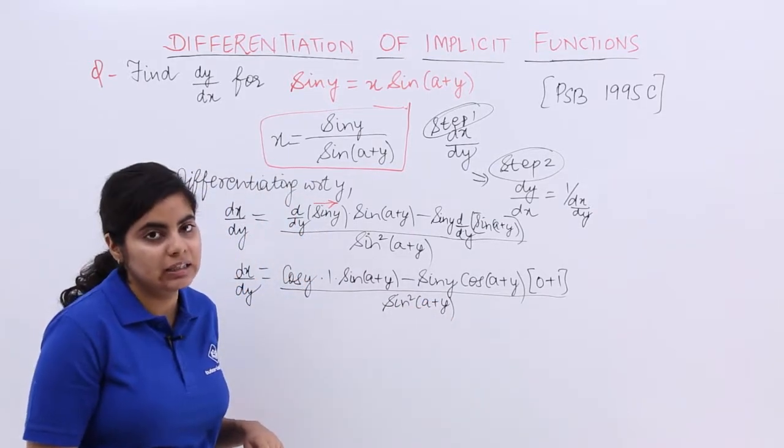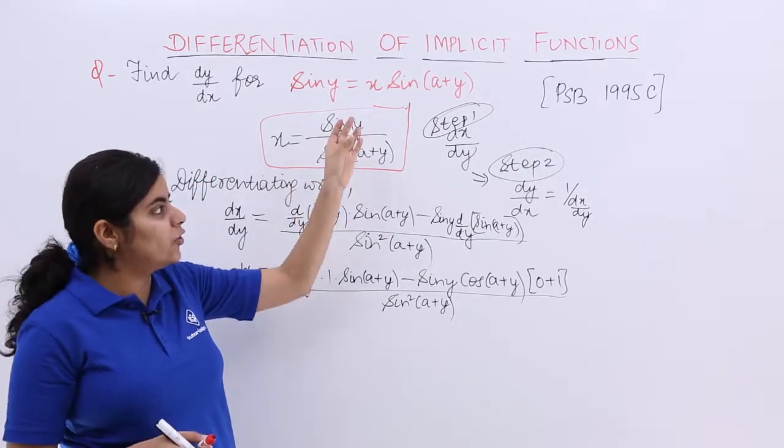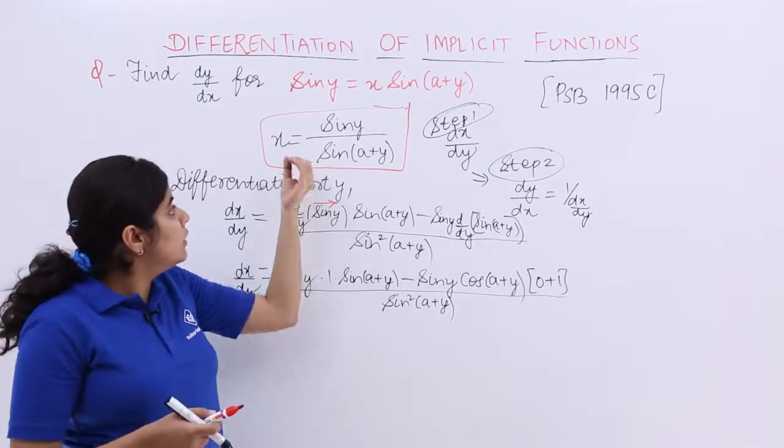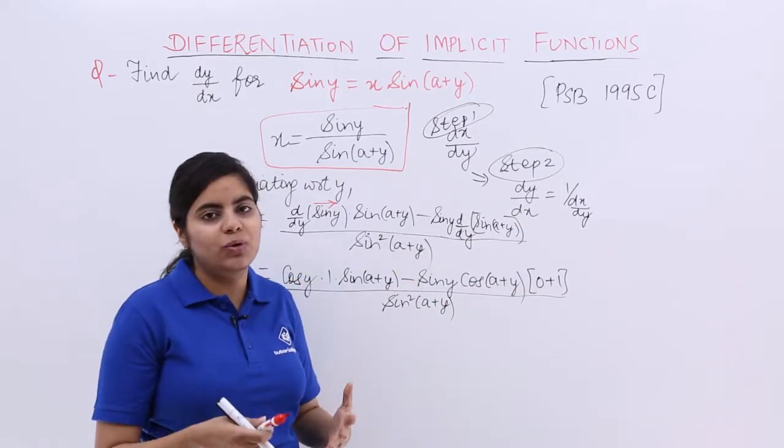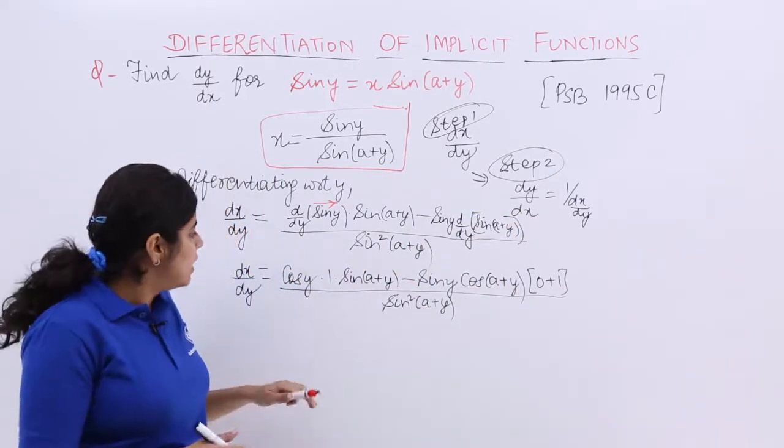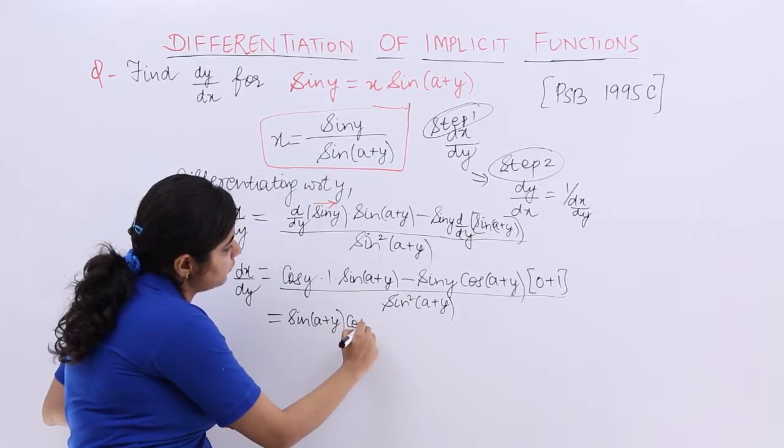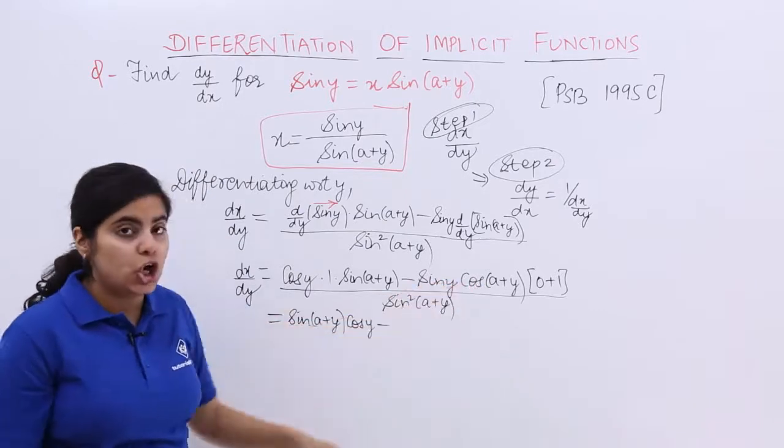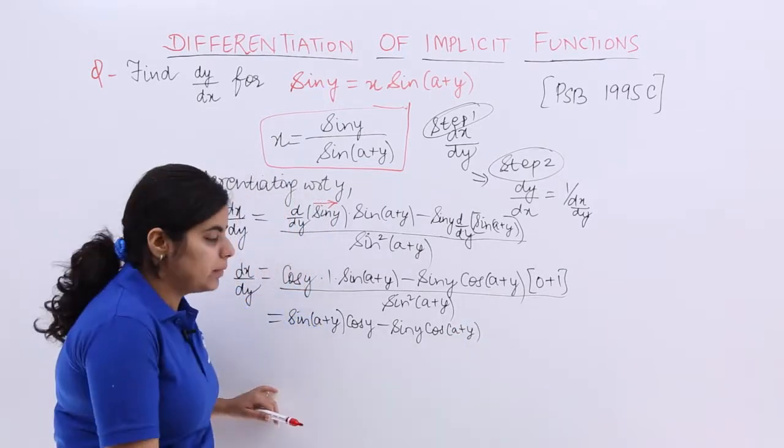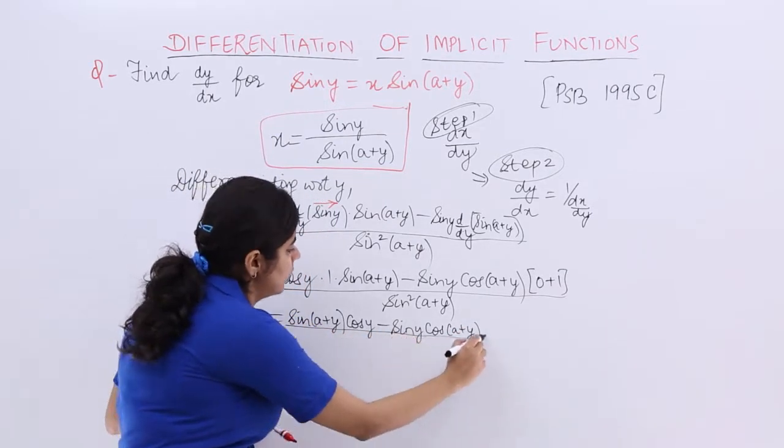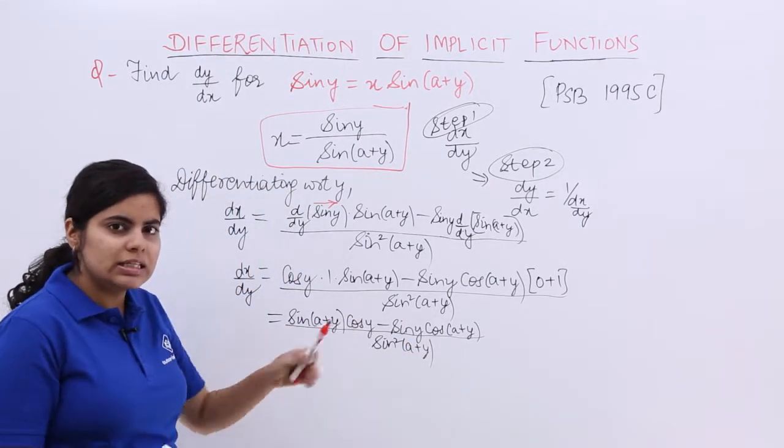I hope things are getting clear. I repeat the question and solution again. Now it is multiplication of all these, so it is sin(a+y) cos y minus cos(a+y) sin y upon sin square(a+y). Now you see that this is a familiar formula: sin a cos b minus cos a sin b.